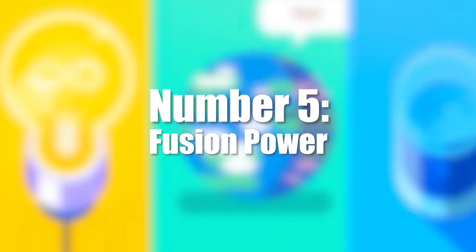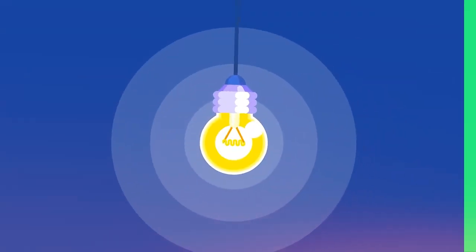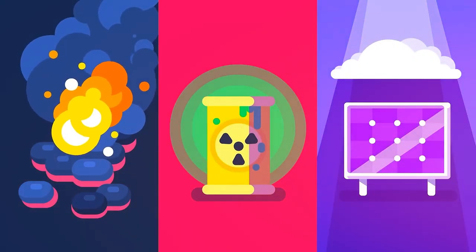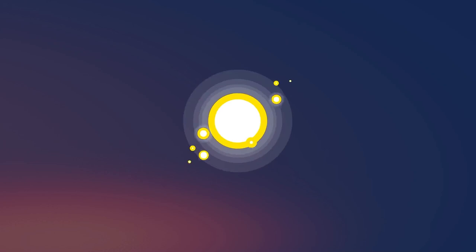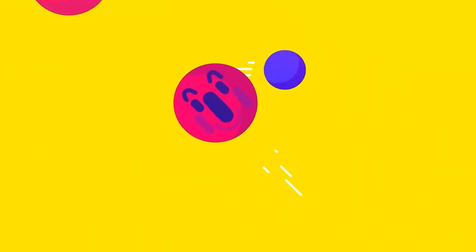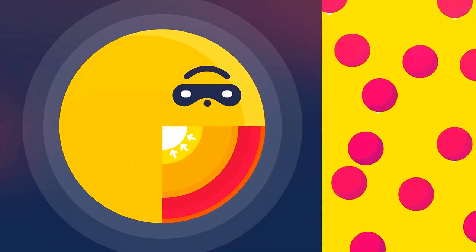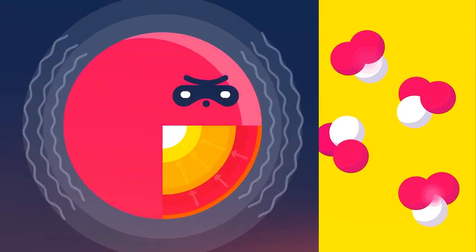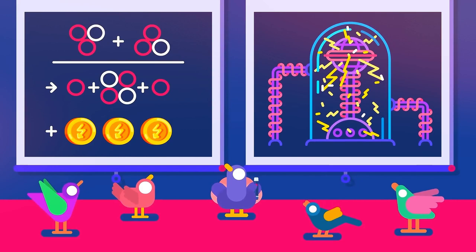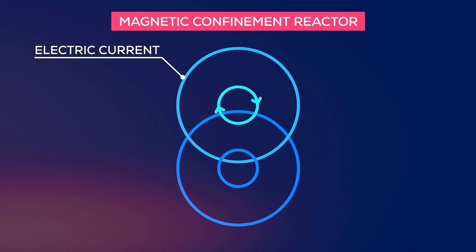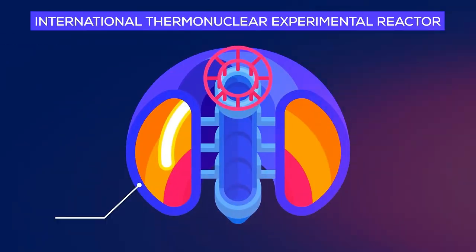Number 5, fusion power. Imagine endless clean energy powering the world without harming the environment. That's fusion power, and it's becoming a reality. Fusion, the process powering the sun, smashes atoms together for massive energy. Unlike current nuclear power, it's safe and waste-free. Scientists are building machines to contain sun-like temperatures, creating mini-stars on Earth. If successful, fusion could solve our energy problems forever, providing clean, safe power for homes, cars, and factories without depleting resources or damaging the planet.